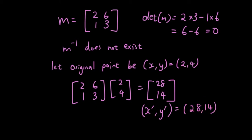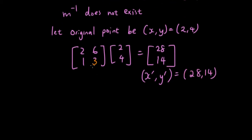But since there is no way for us to find the inverse of this matrix, there is no way we can go backwards to give us the original point. So when the transformation matrix is singular...